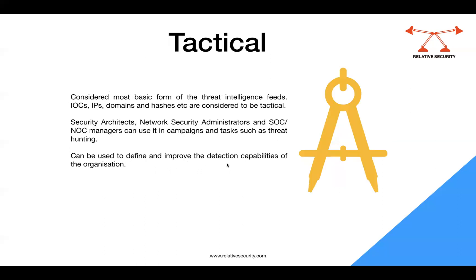The third and last level is tactical intelligence. This is the basic form of threat intelligence feed where you have the potential to immediately influence the decisions taken at the tactical level. The data used here is derived from real-time monitoring of your environment — it could be threat intelligence feeds, adversary actions, malicious files or code they are using. For example, it could be IOCs, IPs, domains, and hashes — all basic forms of threat intelligence feeds that fall under tactical level threat intelligence.